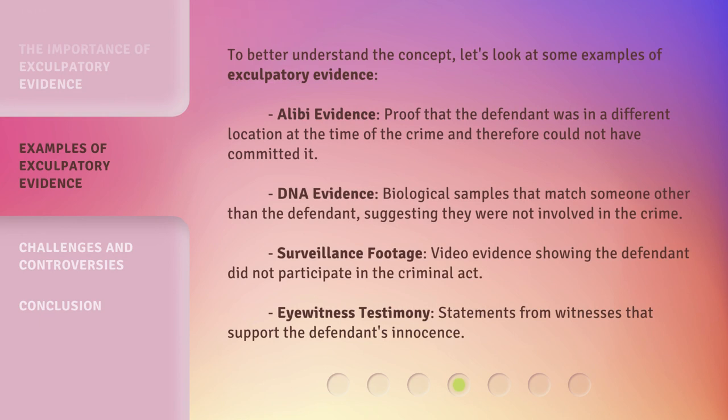To better understand the concept, let's look at some examples of exculpatory evidence. Alibi evidence: proof that the defendant was in a different location at the time of the crime and therefore could not have committed it. DNA evidence: biological samples that match someone other than the defendant, suggesting they were not involved in the crime. Surveillance footage: video evidence showing the defendant did not participate in the criminal act. Eyewitness testimony: statements from witnesses that support the defendant's innocence.